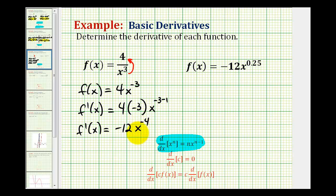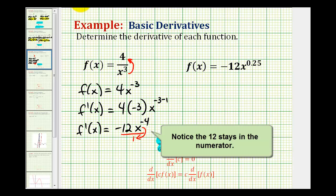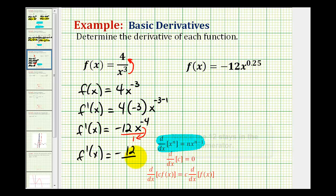And then we'll go ahead and rewrite this as a positive exponent by moving it back down to the denominator. Moving it back down will make this exponent positive 4. So our derivative is going to be equal to negative 12 all over x to the positive 4 power.